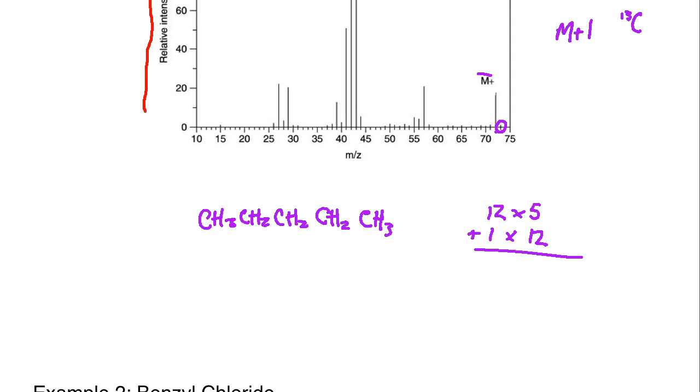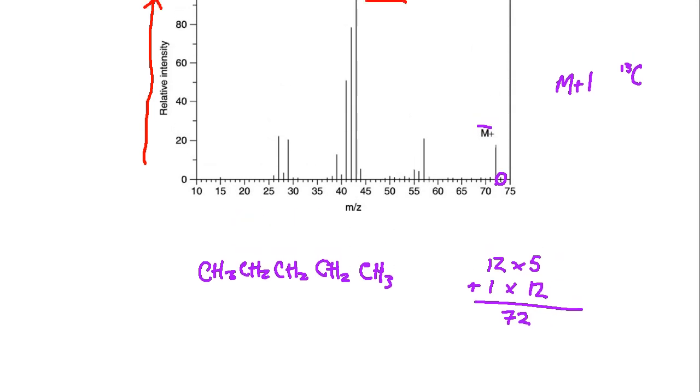There's going to be 12 hydrogens at one apiece. If you multiply those and add them up, 12 times 5 is 60 plus 12 is going to be 72. So if we have 72, that matches up with the M+ peak that we have right there.